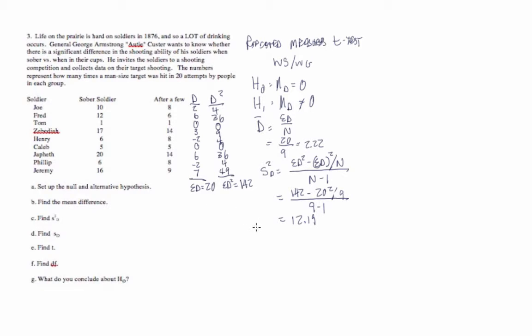The next step is our standard error term, s sub d, and that's equal to our variance term over n. So 12.19 over 9, all under a root sign, and that's going to be equal to 1.16.